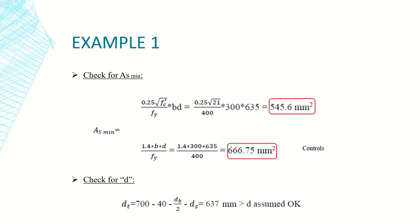Then we have to check for As minimum, which is the minimum ratio of reinforcement as per ACI code. We have two formulas. The first one is 0.25 radical f'c over fy times bd. This is rho minimum. This term times bd would give me As minimum. Similarly the second term is 1.4 over fy.